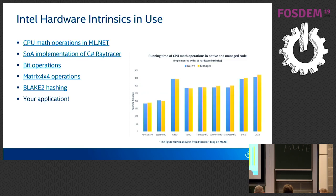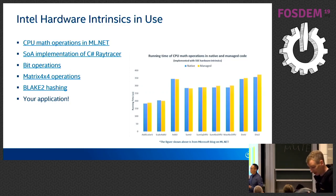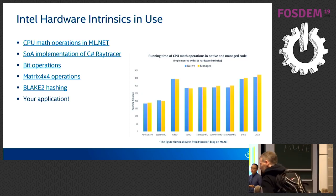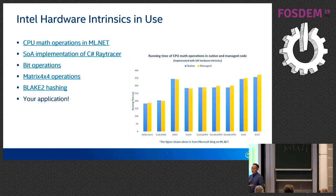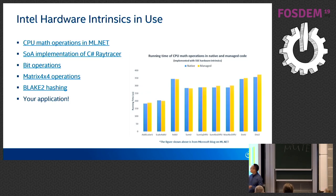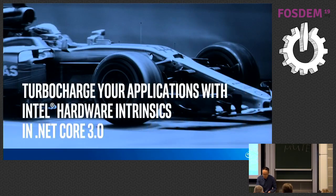Hardware intrinsics are also being used in bit operations — PopCount is one example. There are other operations like trailing zero count and leading zero count that are used in the context of image manipulation, string processing, and string conversion. Matrix 4x4 has been optimized. There is also a hashing algorithm called Blake2 which is taking advantage of Intel intrinsics in C#. If your application is performance sensitive, it may be one of the candidates.